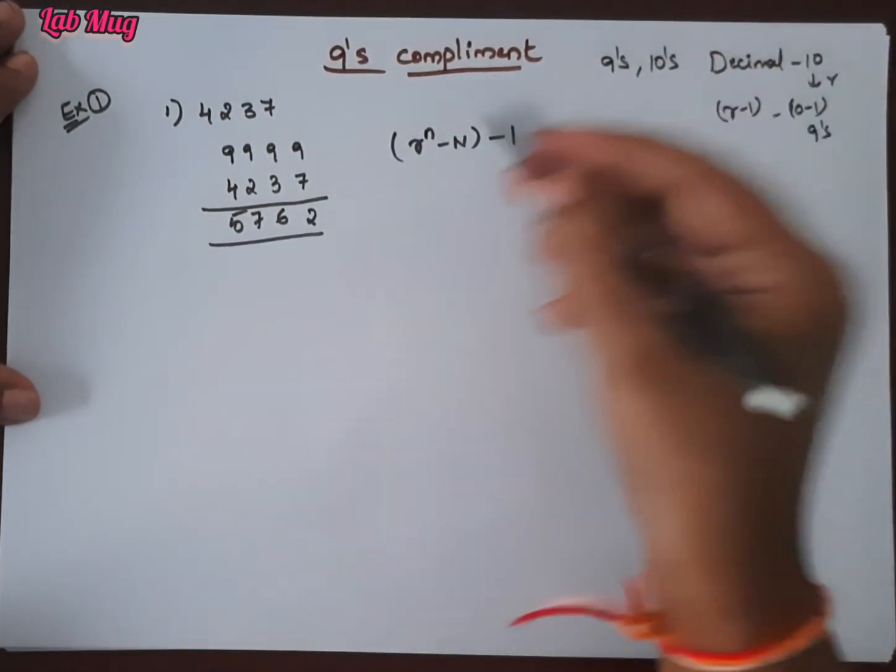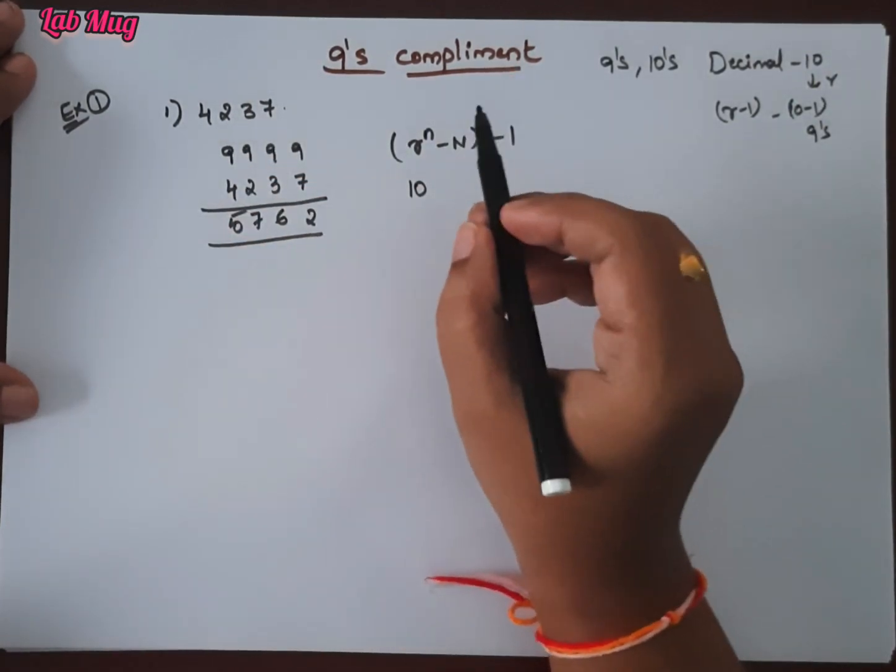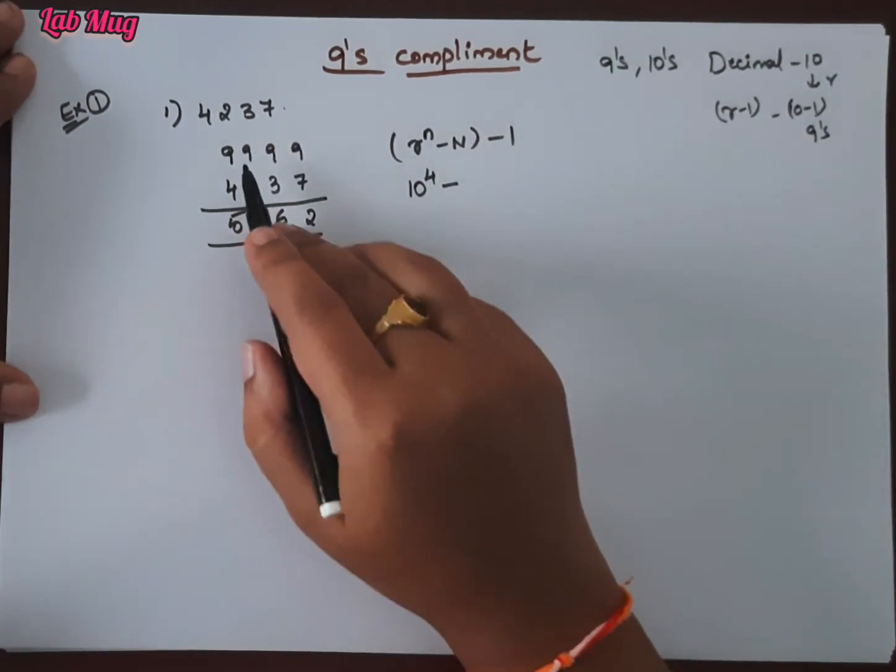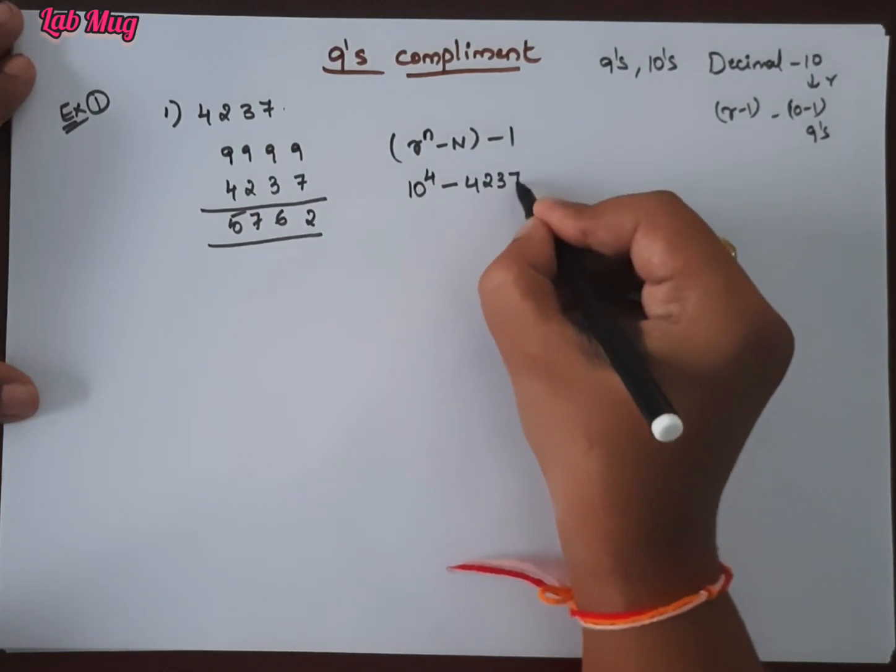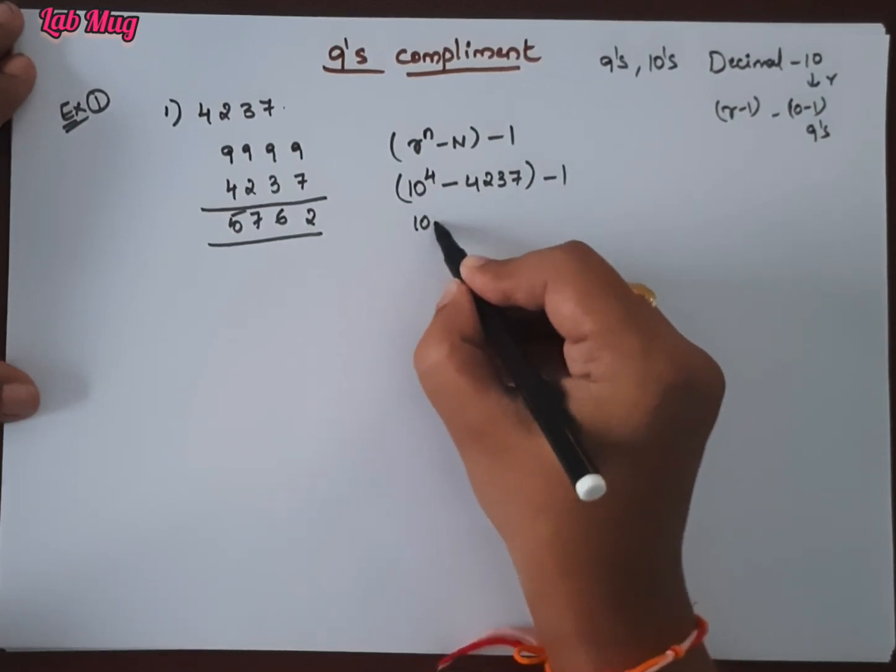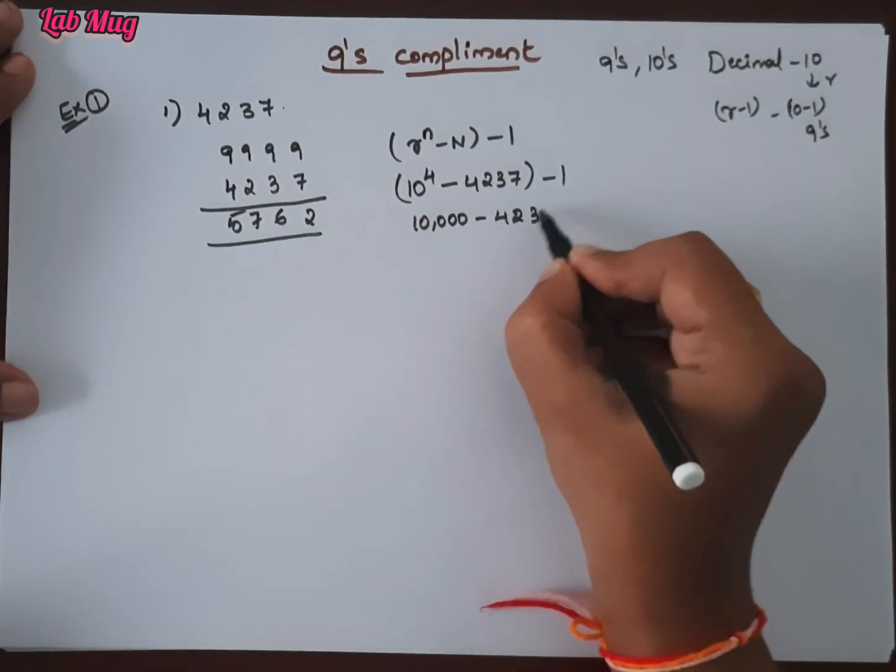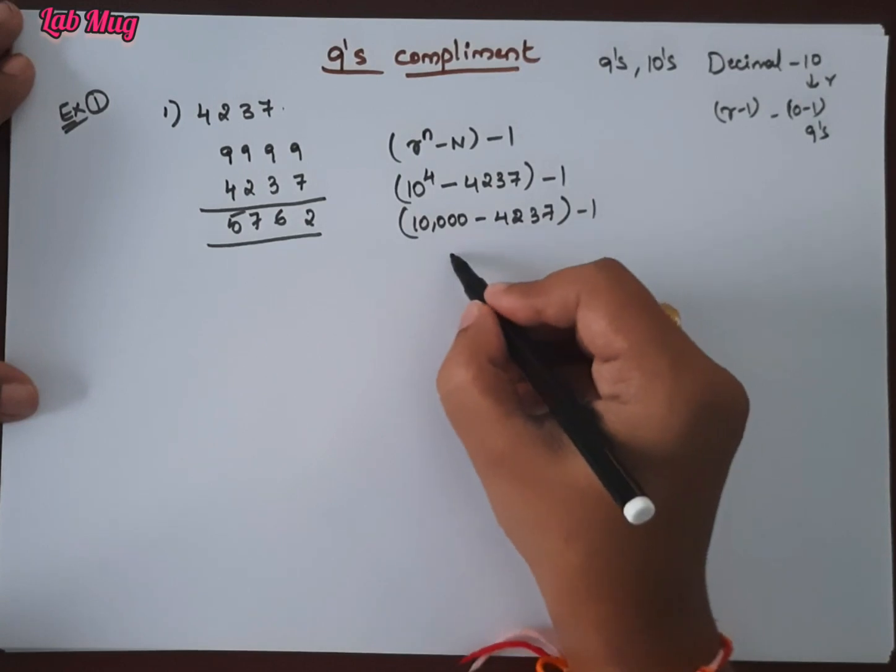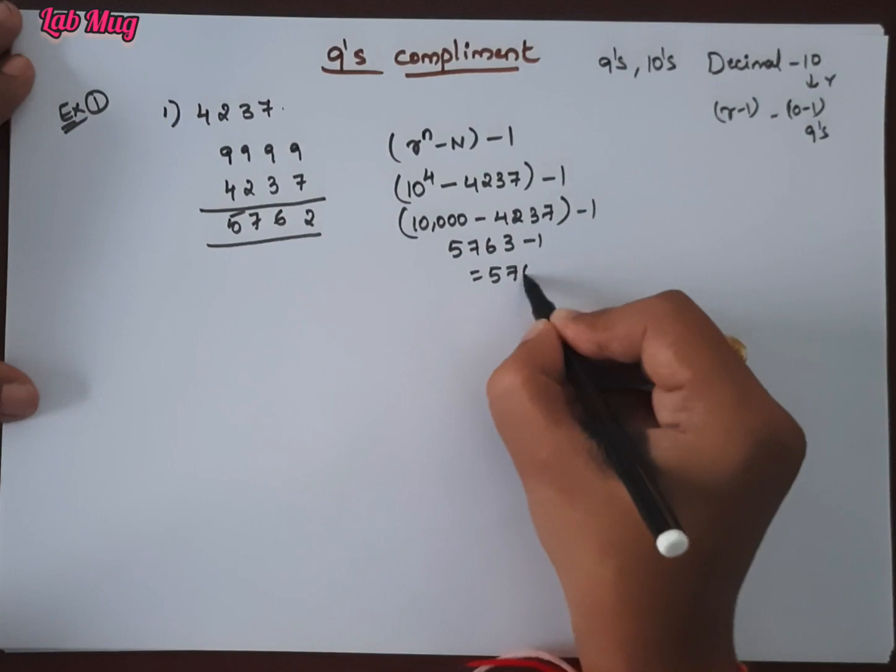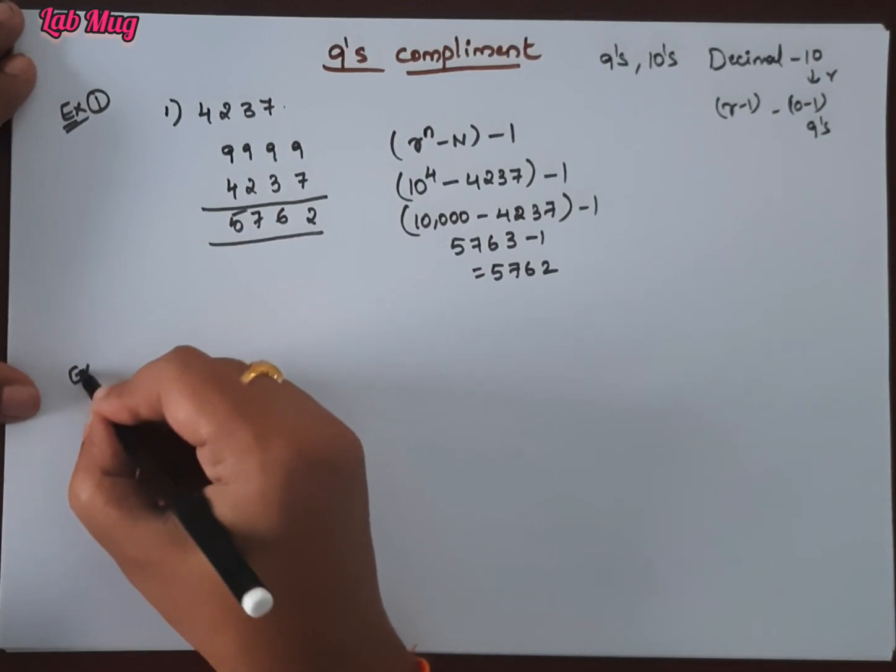The formula is r power n minus capital N minus 1. What is r? Here r is 10. 10 power n, where small n is the total number of digits. Number of digits is 4. That is 10 power 4 minus the given number 4237 minus 1. 10 power 4 is 10,000 minus 4237 minus 1, which equals 5763 minus 1, equals 5762. This is the decimal number method.